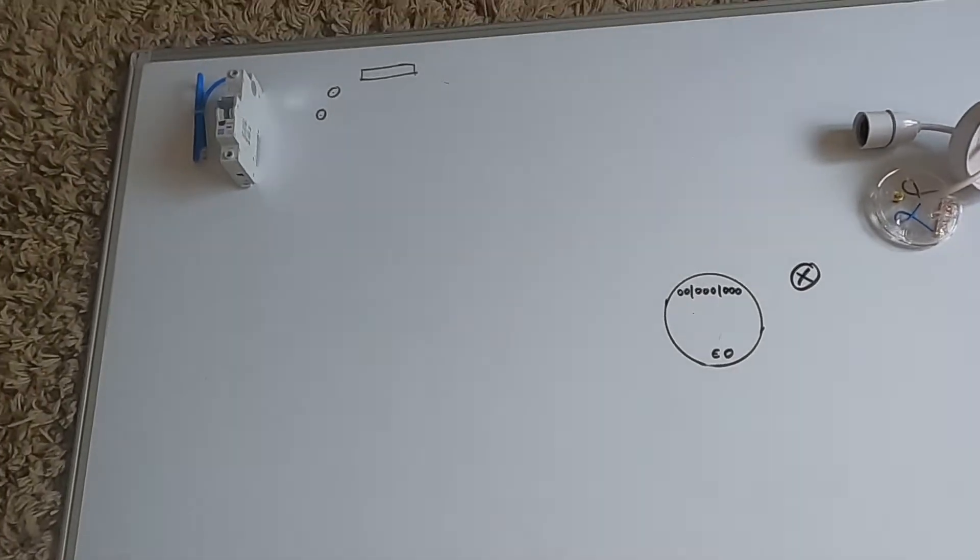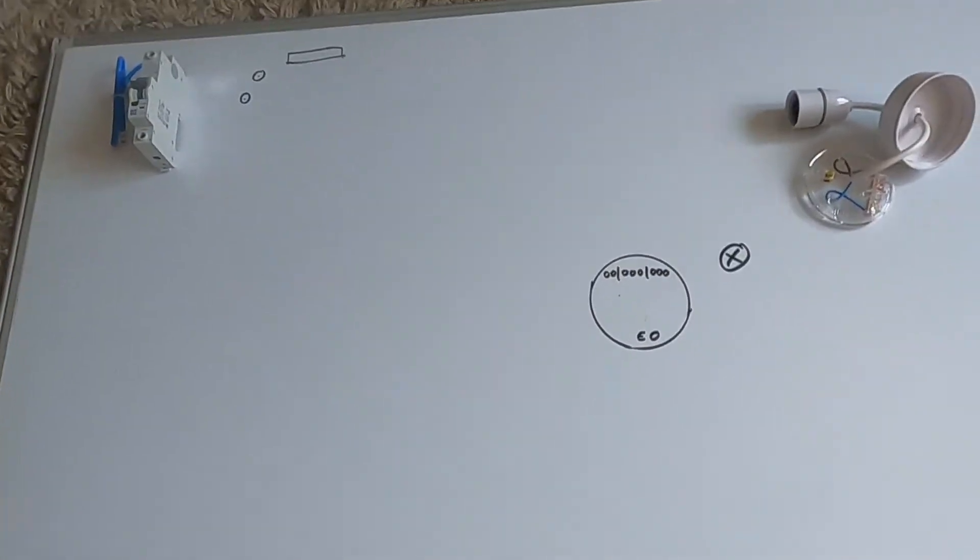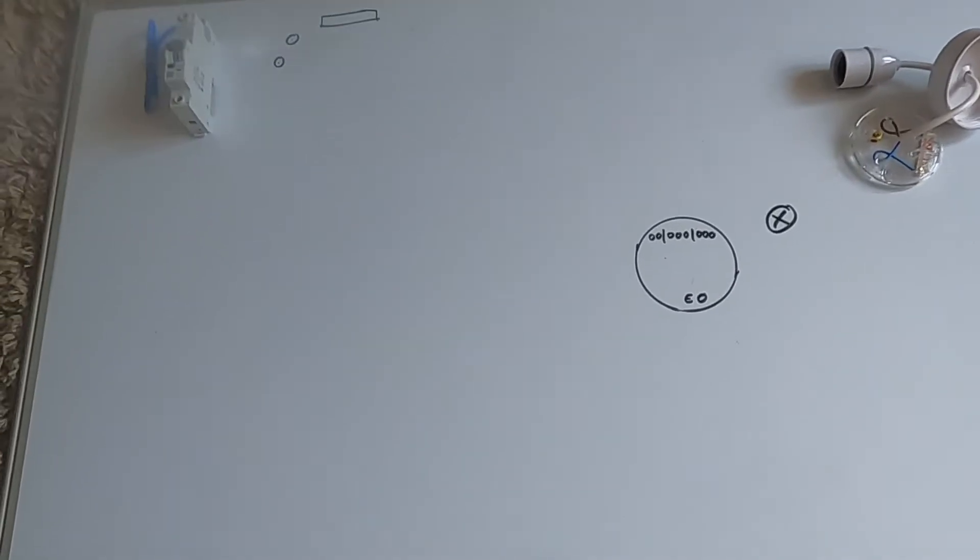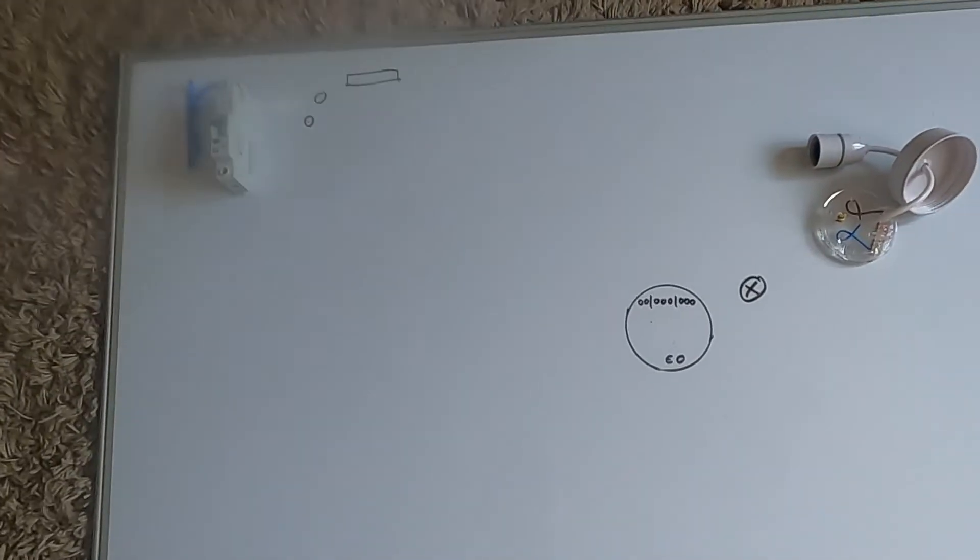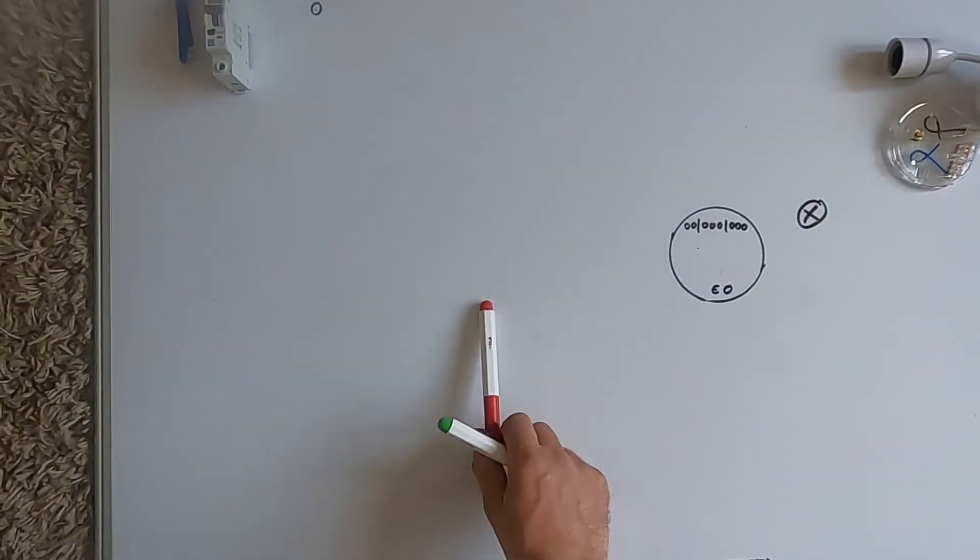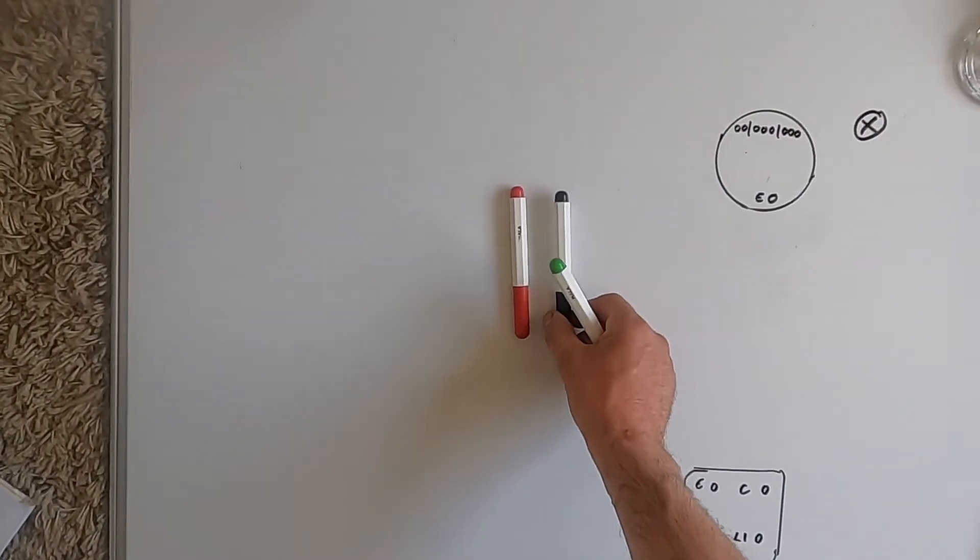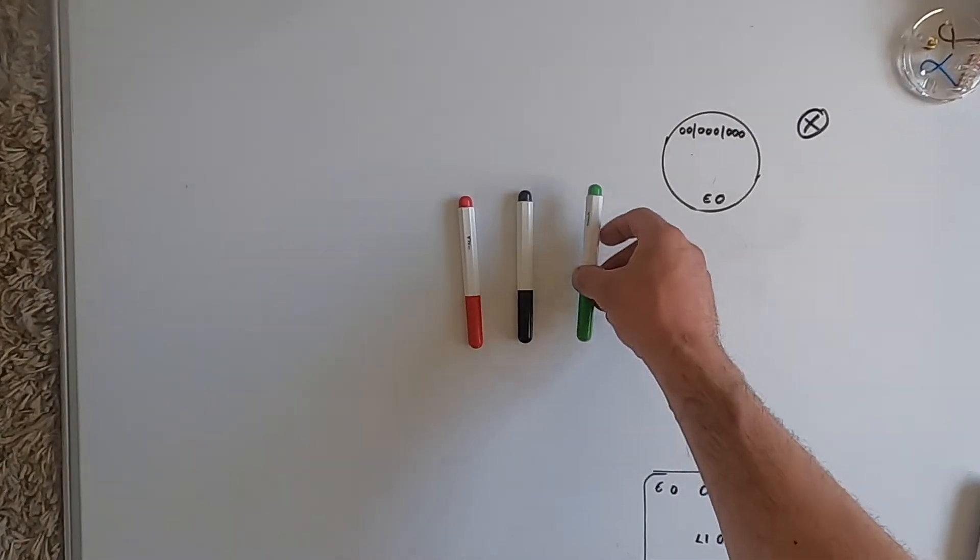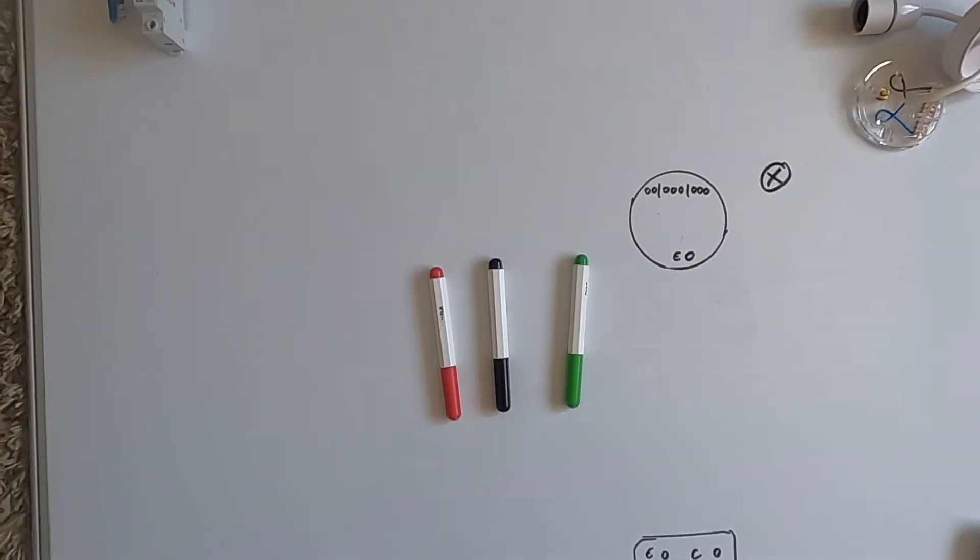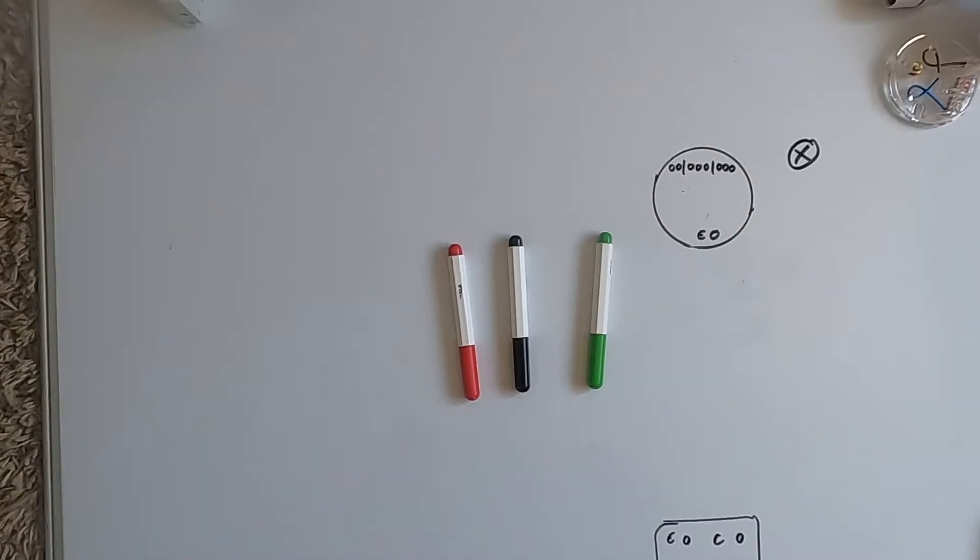And because this is going to be a traditional way of maybe old houses built prior to 2004 before the colors got harmonized, you'll find that the live is red, the black will be neutral, and the earth will be green and yellow. So these are the colors we're going to use.